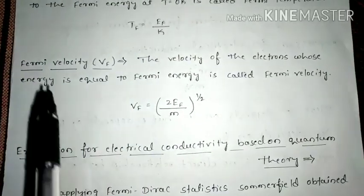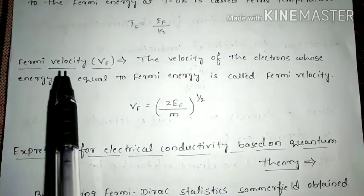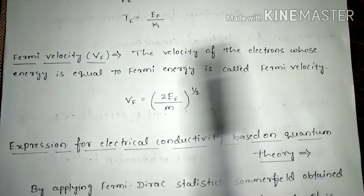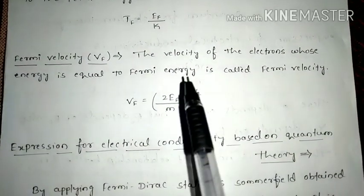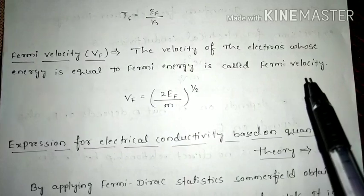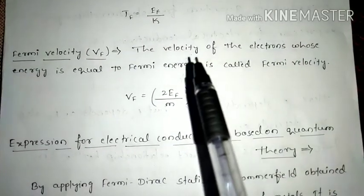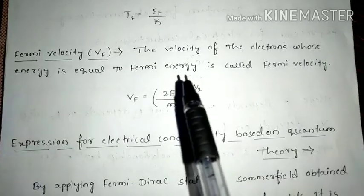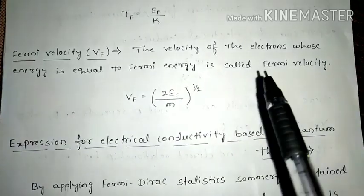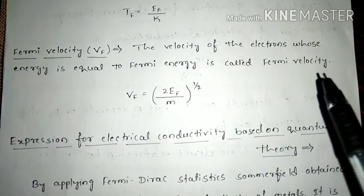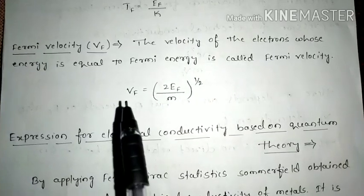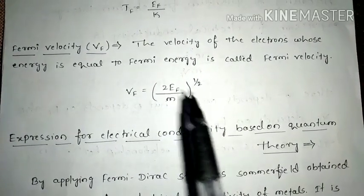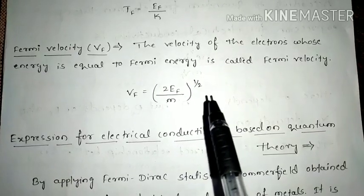Similarly, we will define Fermi velocity. It is the velocity of the electron whose energy is equal to the Fermi energy, and that velocity is called Fermi velocity. It is given as Vf = (2Ef / M)^(1/2).